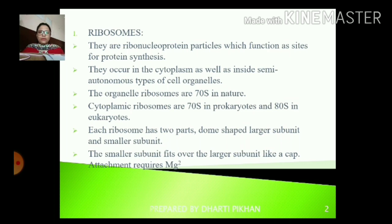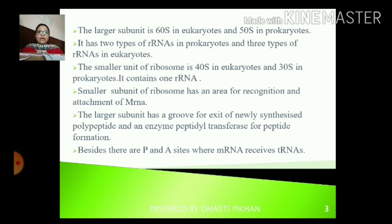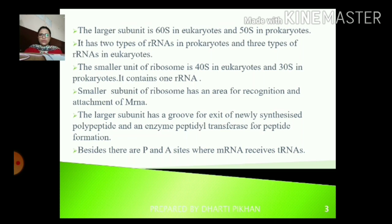Cytoplasmic ribosomes are 70S in prokaryotes and 80S in eukaryotes. Each ribosome has two parts — first one is a dome-shaped larger subunit and the second one is a smaller subunit. The larger subunit fits on top of the smaller subunit, and magnesium ions are used for their attachment — like a cap attached to the smaller subunit. The larger subunit is 60S in eukaryotes and 50S in prokaryotes, with two types of rRNAs in prokaryotes and three types in eukaryotes. The smaller subunit is 40S in eukaryotes and 30S in prokaryotes. The 'S' here is the Svedberg unit or sedimentation coefficient.